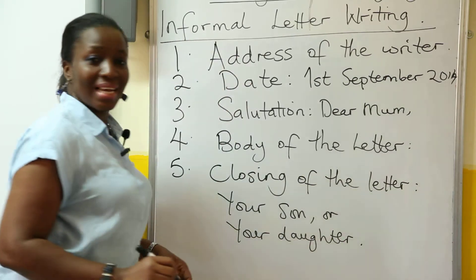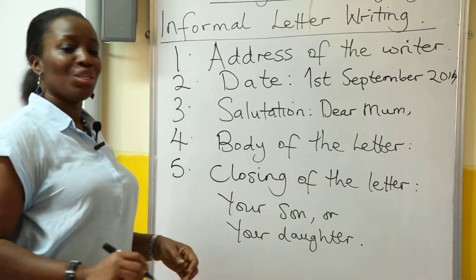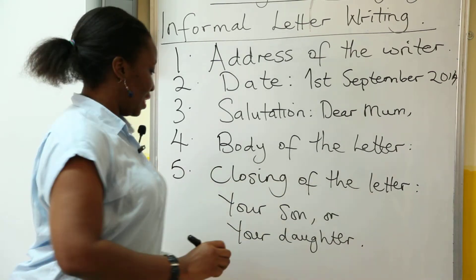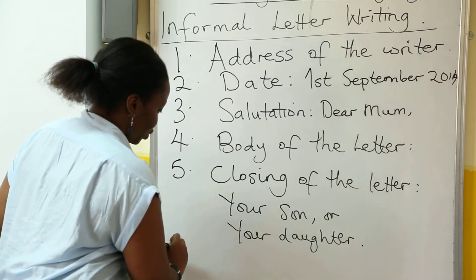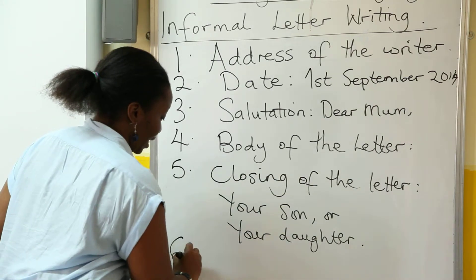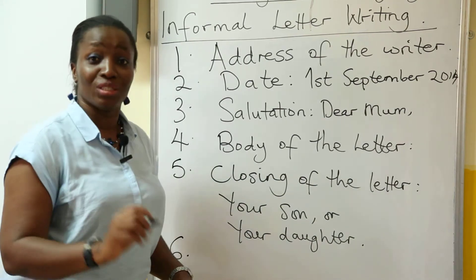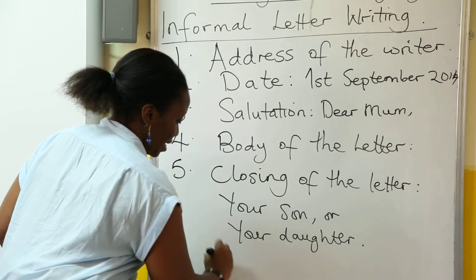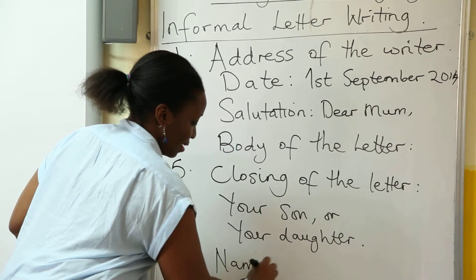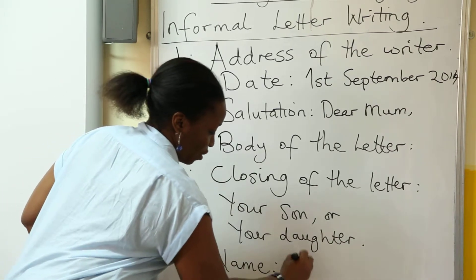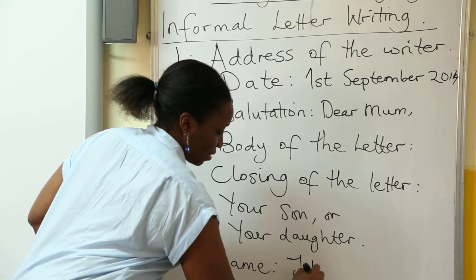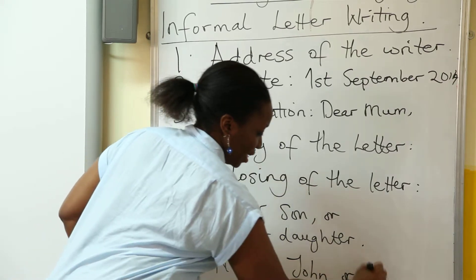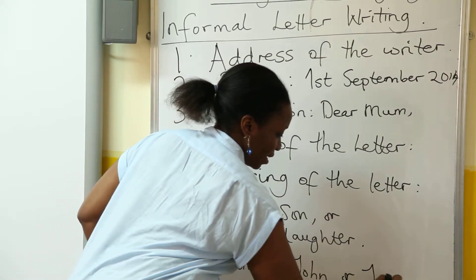The last thing you do after you've written the closing is to write your name so they can be sure it's you. So you'll have your name — John, or Jane, if you're a girl.